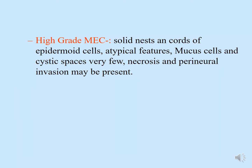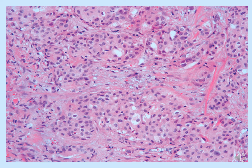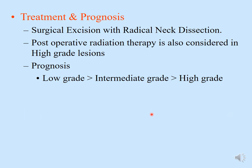In high-grade mucoepidermoid carcinoma, you see solid sheets of epidermoid cells, many atypical features, fewer mucus cells and cystic spaces, necrosis, and perineural invasion may be seen. The slide shows a hypercellular image of high-grade mucoepidermoid carcinoma: the few white spaces are mucus cells, with the majority being epidermoid cells and scattered intermediate cells.